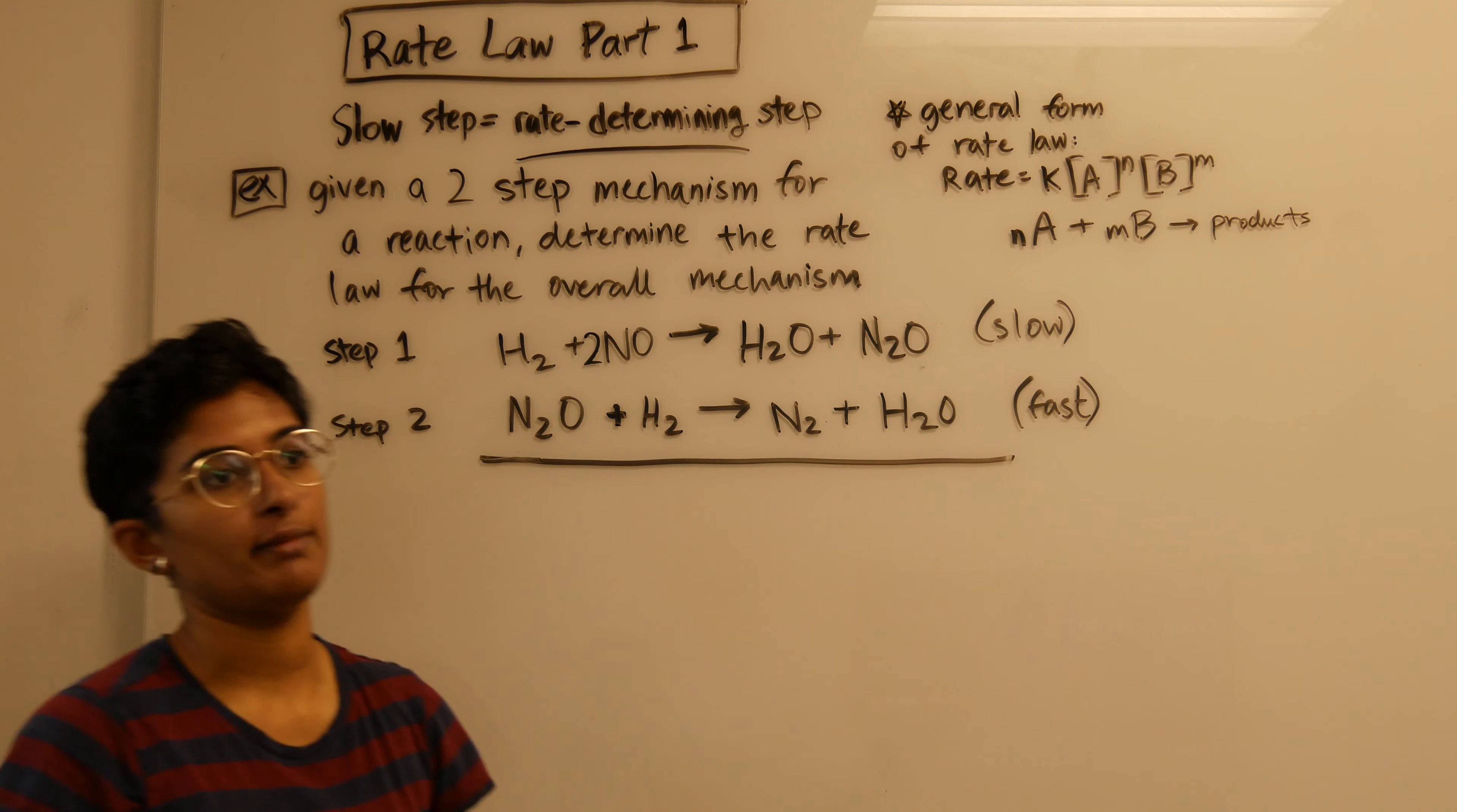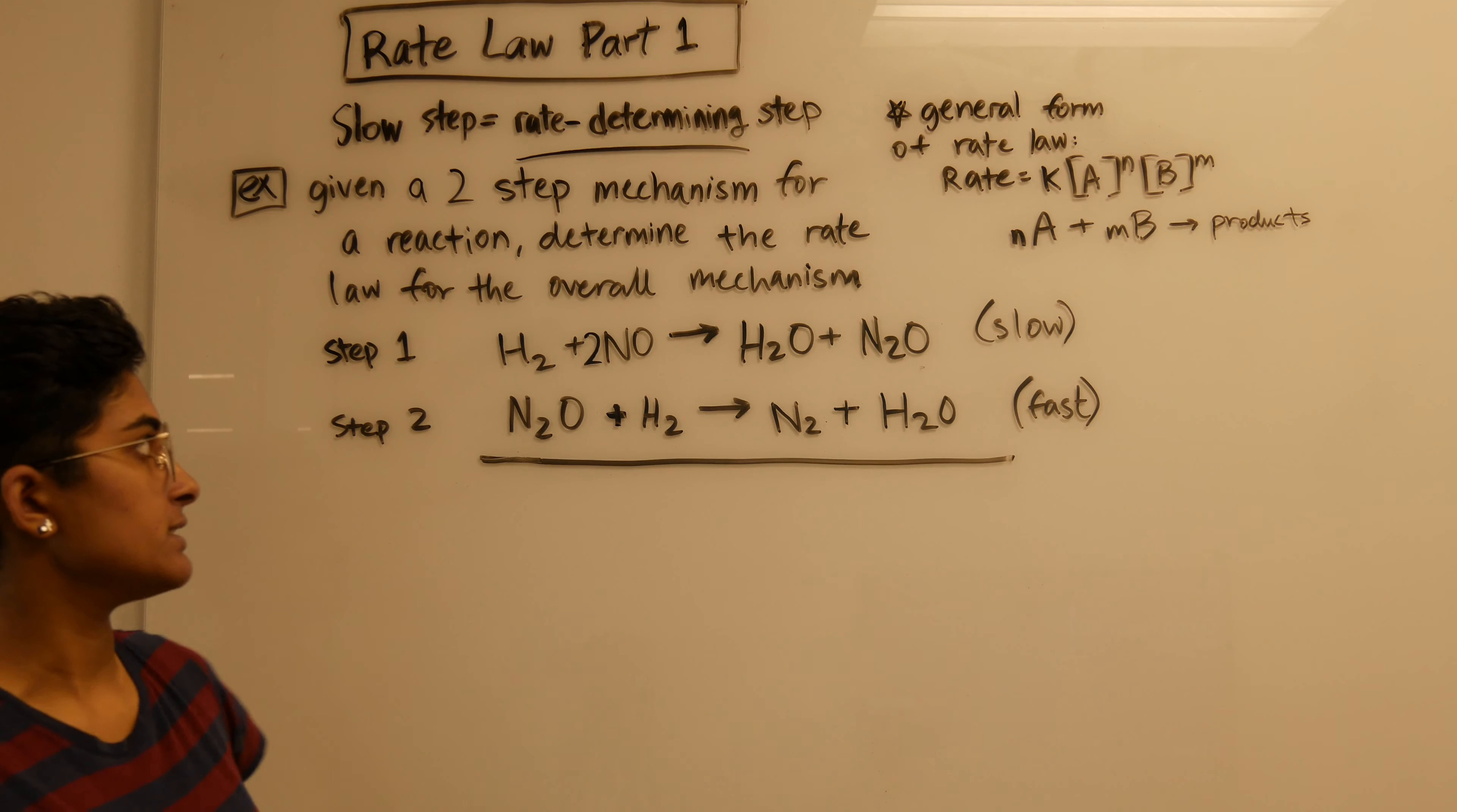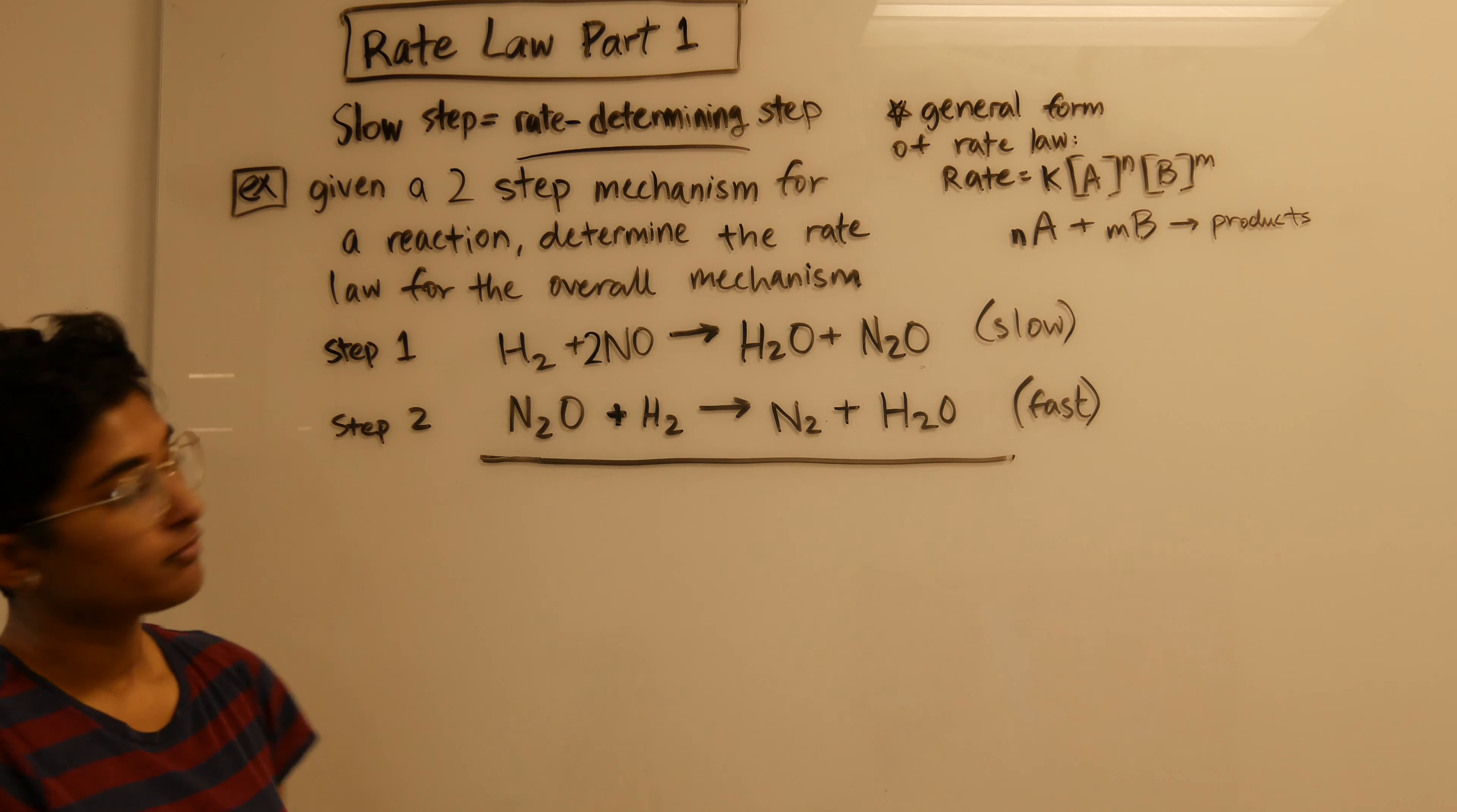There are two different ways you can go about solving a rate law problem. This is the first way - it's the easier way and requires less steps. The difference is that in this way the slow step will be your first step and there will be no intermediates in that slow step on the reactive side.